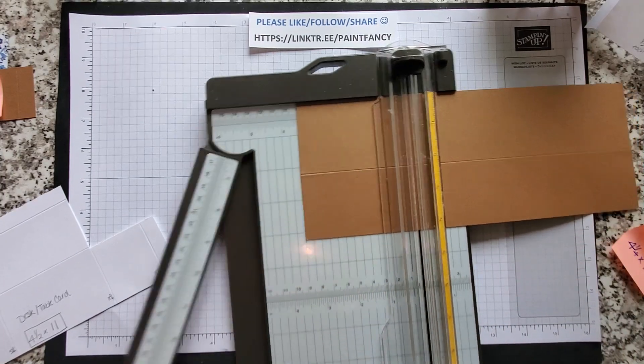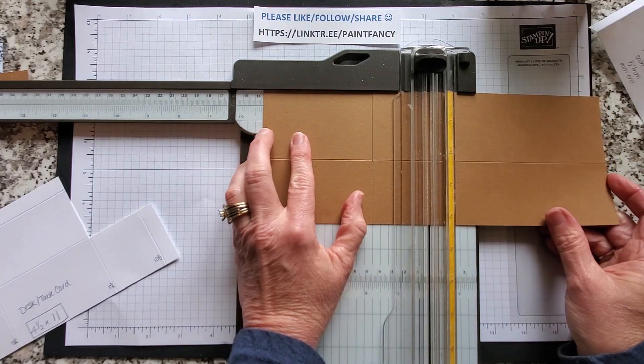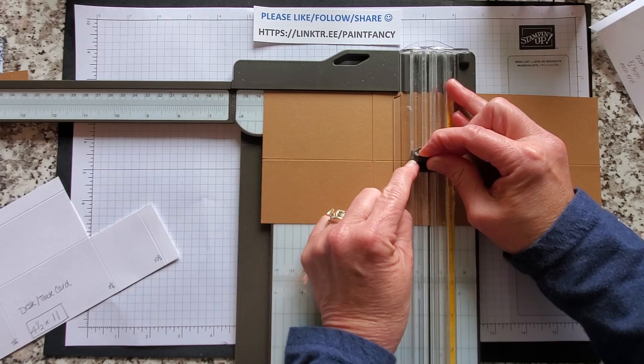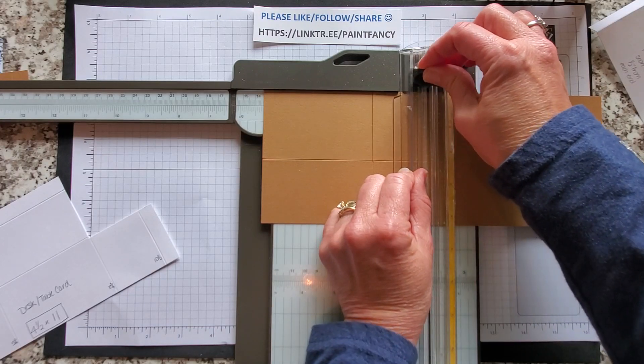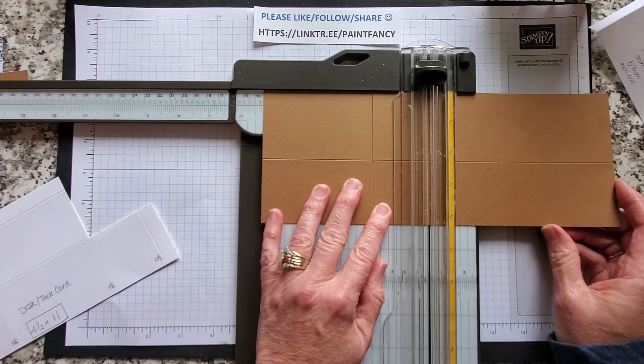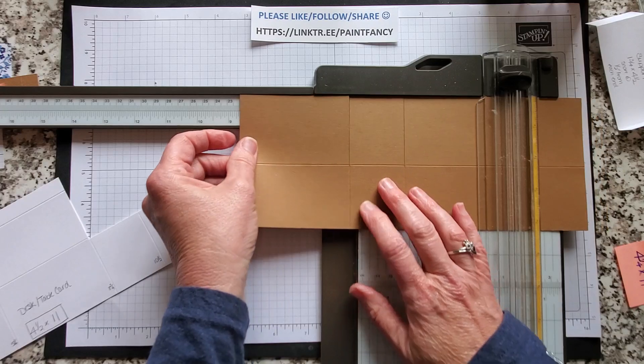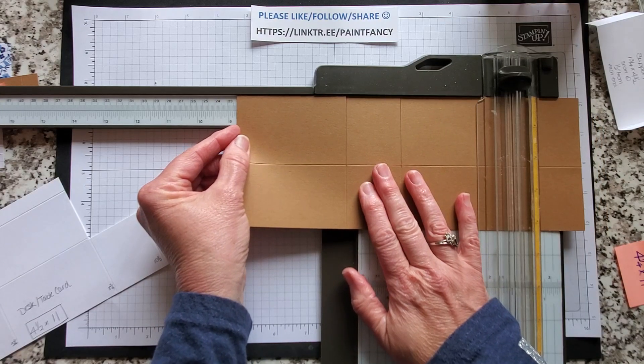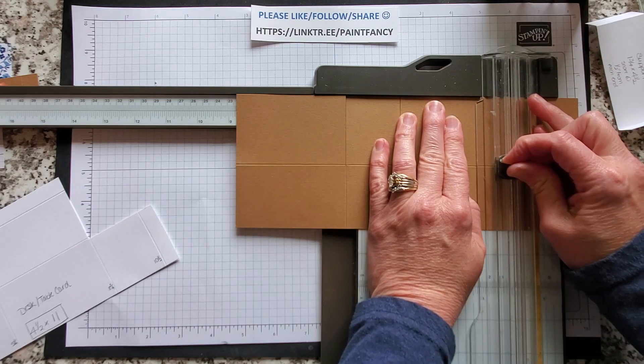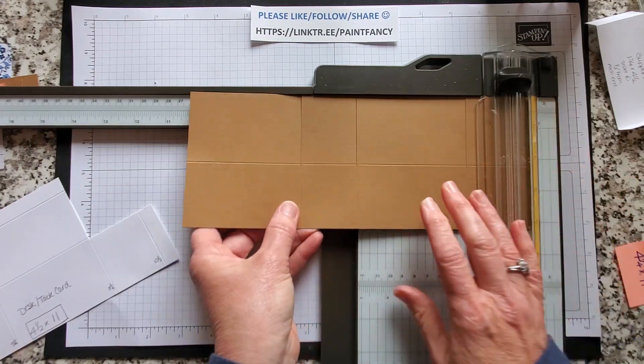Now we are going to move over to the five and a quarter mark and do the same thing. We're going to cut down to the score line, which you can see because we have a little notch in our cutting blade, and then we're going to come up and score from the bottom up. Now we're going to move over to eight and three quarters. Same thing: cut down to the score line and score up to the score line.